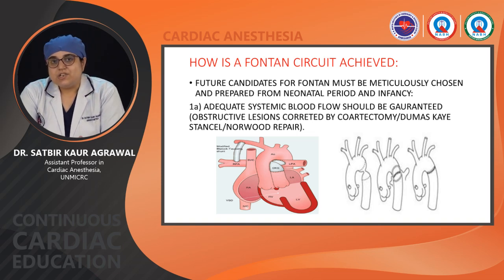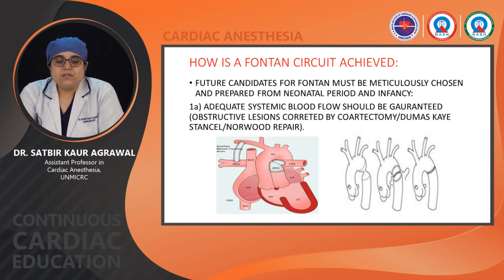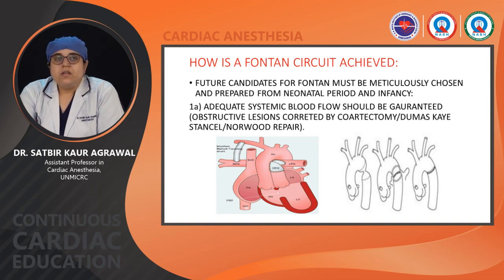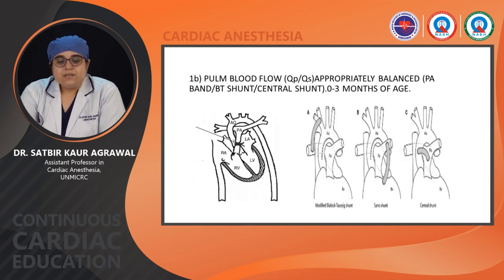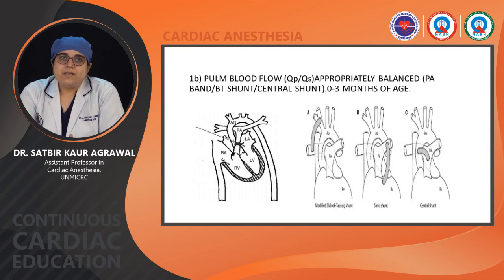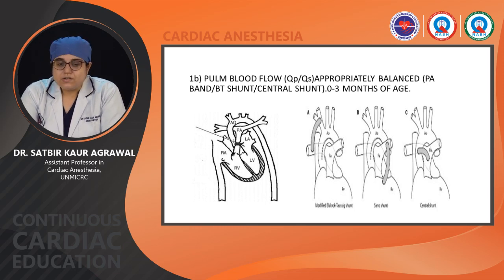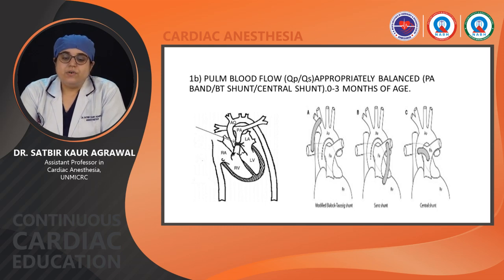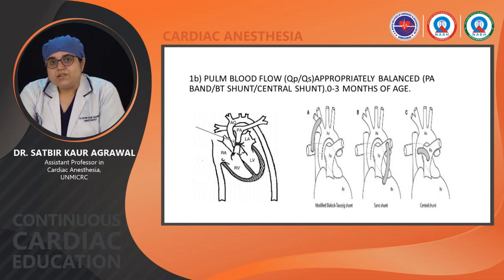There are three major stages of palliation. The first can be divided into two sub-stages. The first sub-stage is that adequate systemic blood flow should be guaranteed — there should not be any systemic outflow obstruction. If there is, it should be corrected with coarctectomy, Damus-Kaye-Stansel, or Norwood repair. The second sub-part is balancing the pulmonary and systemic blood flow — QP/QS should be appropriately balanced — either with PA banding to lessen pulmonary over-circulation or a shunt to ensure good arborization of the pulmonary arteries.